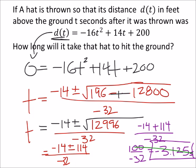So let's find the other one, and that would be negative 14 minus 114, all over negative 32. So negative 14 minus 114 is negative 128, divided by negative 32, and I get 4 out of that.